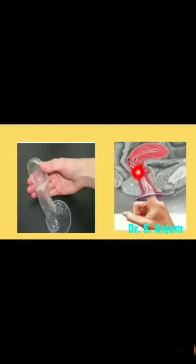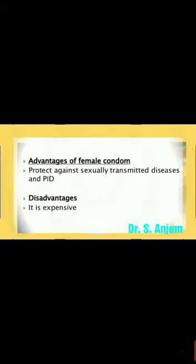The outer ring is at the introitus. Advantage: protection against sexually transmitted diseases and pelvic inflammatory disease. Disadvantage: it is expensive.